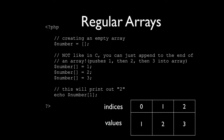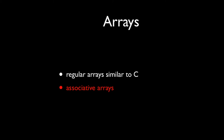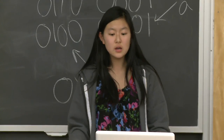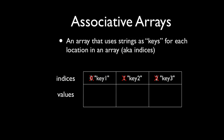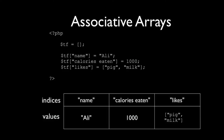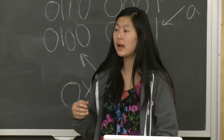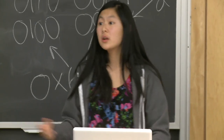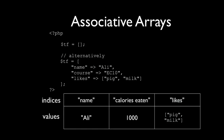Associative arrays use string indices instead of numerical ones. For example, $tf['name'] = 'Ali', $tf['caloriesEaten'] = some integer, $tf['likes'] = an entire array. You can also define all key-value pairs at once inside a single array() declaration with the => arrow notation. This is more a stylistic choice.